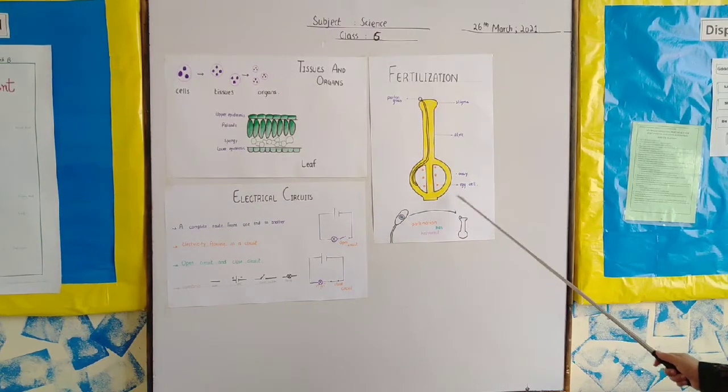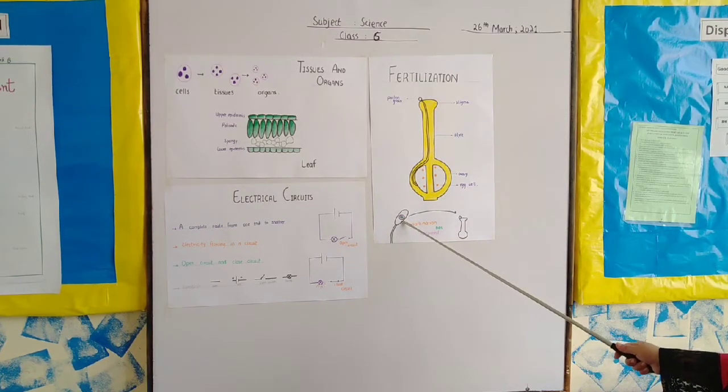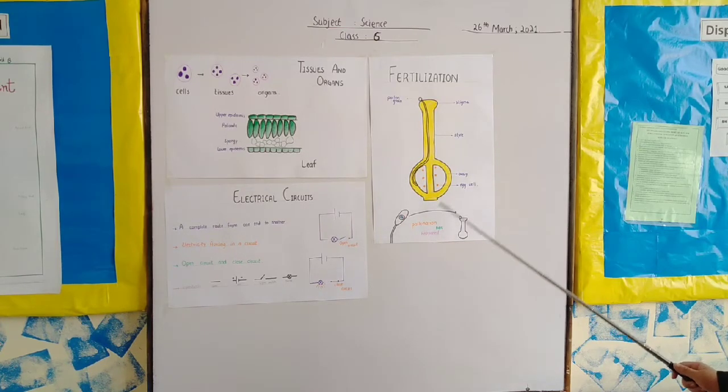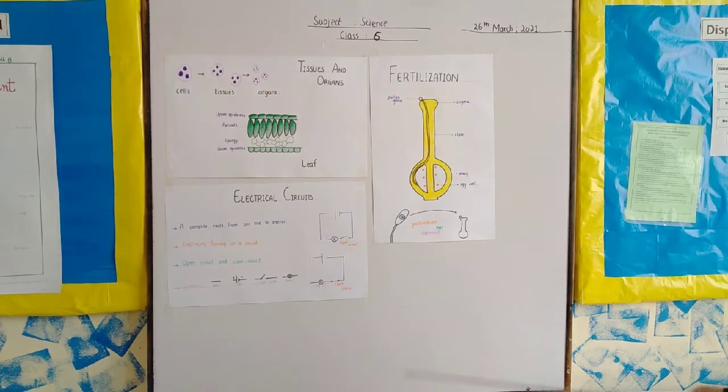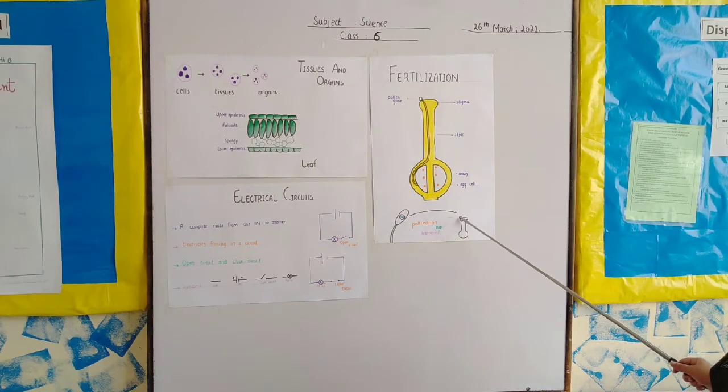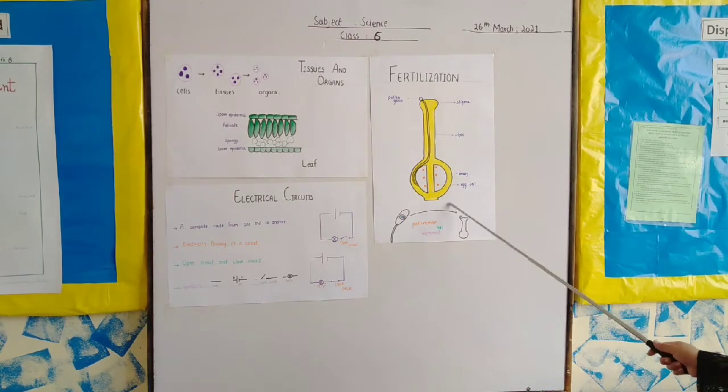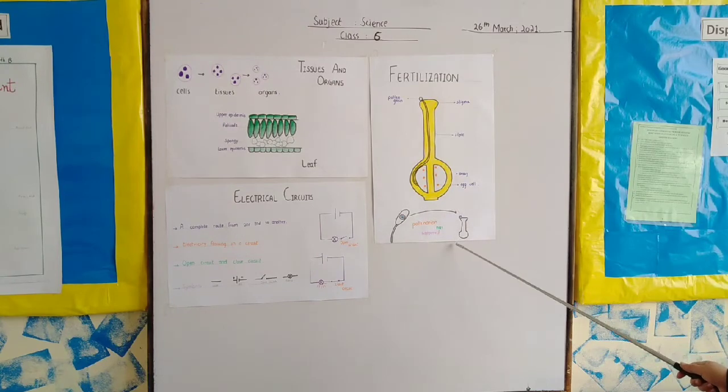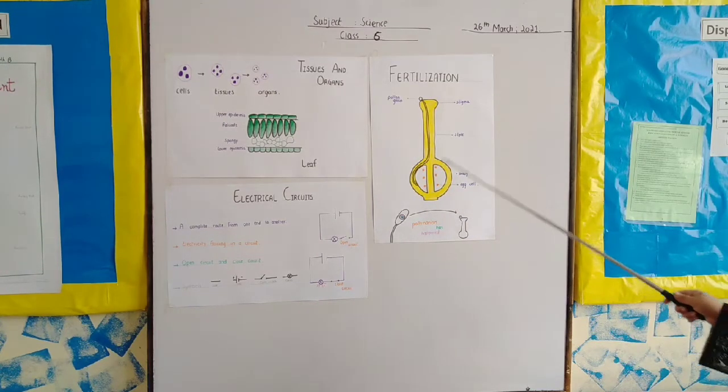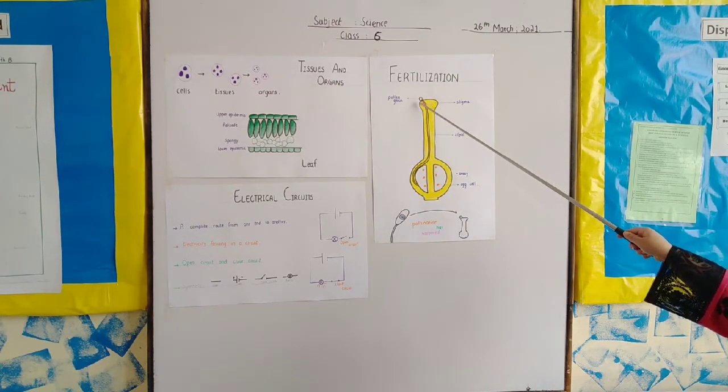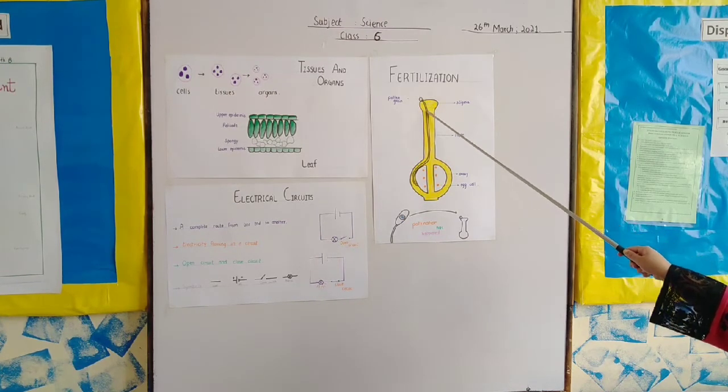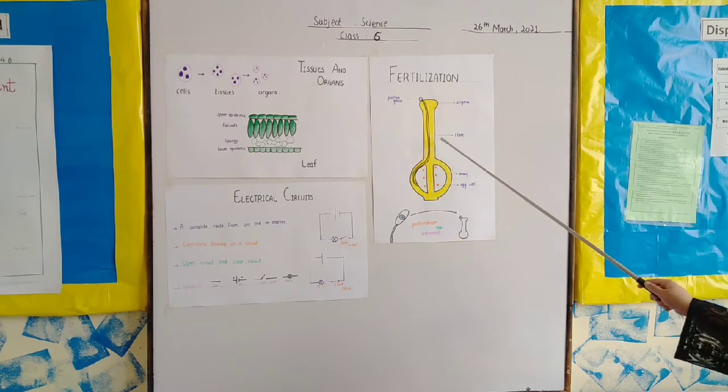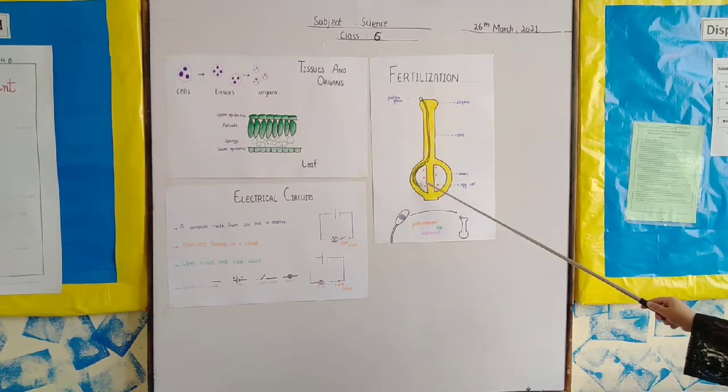Now the reaching of the pollen grains on the stigma of the ovary, this is called pollination and we say that pollination has happened. This process, only this process is called pollination. Now after reaching the stigma, the pollen grain cell grows a tube down through the style into the ovary.